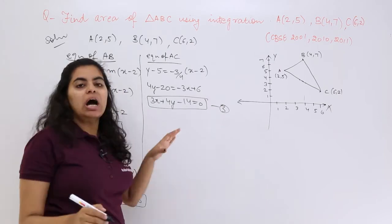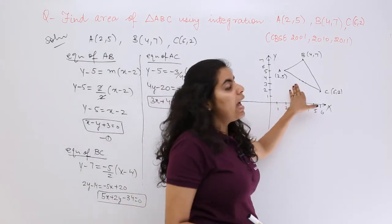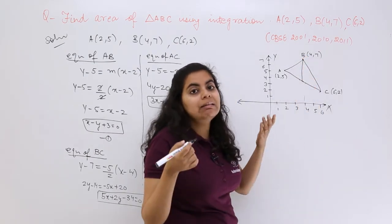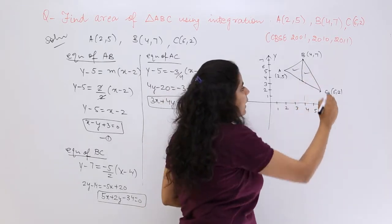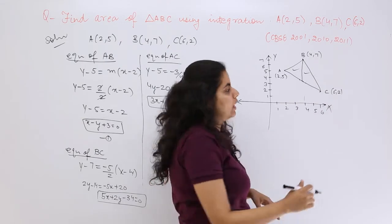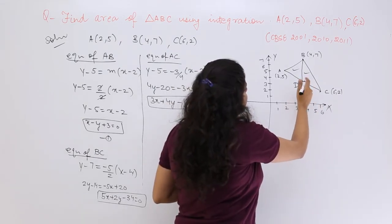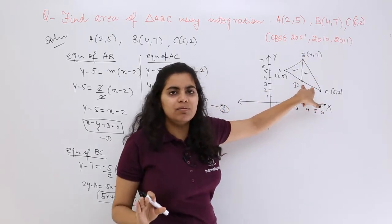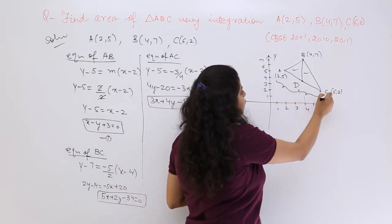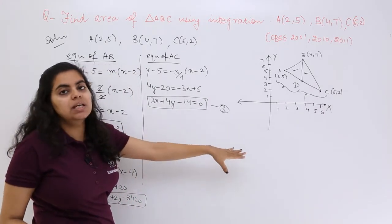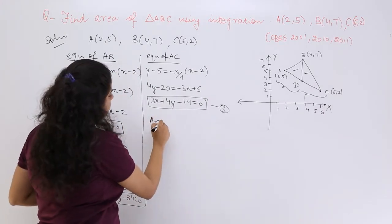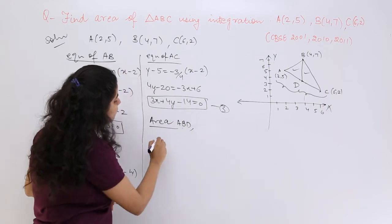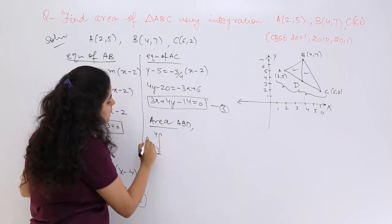Now after you have found out all the three equations, you know that directly you cannot compute this. You have to first know what we are up to. We are up to finding the area through integration. If I can individually find out these three areas and add up, that would be a boon for us. So if I name this as D, what would be the x-coordinate of D? This is the perpendicular, the x-coordinate should be 4. First we are going from 2 to 4, then we will go from 4 to 6.